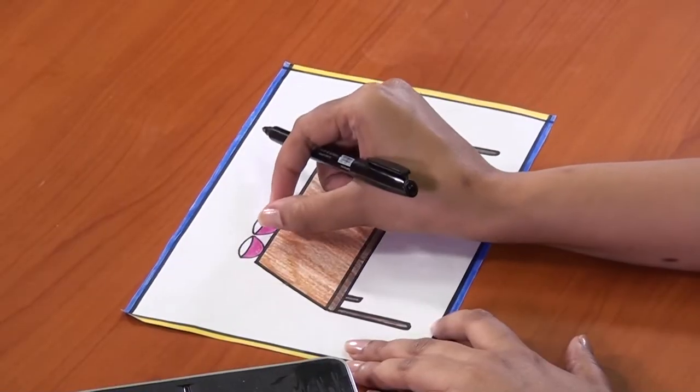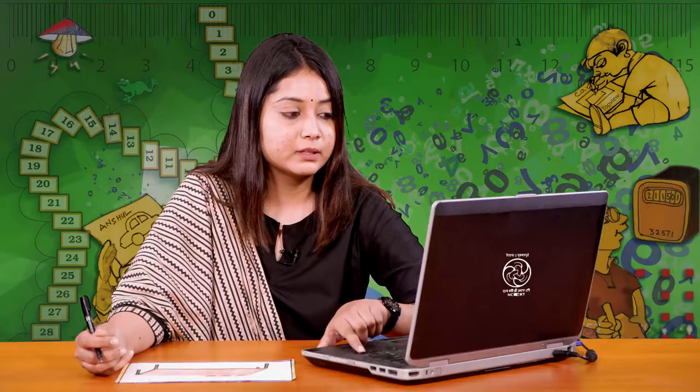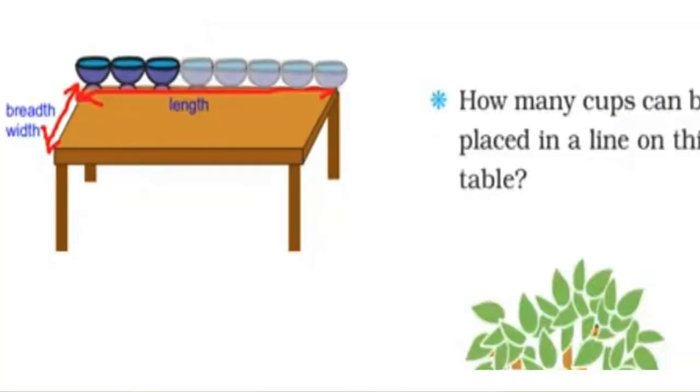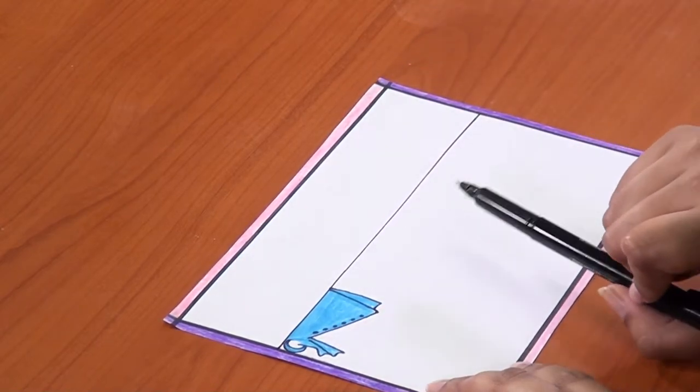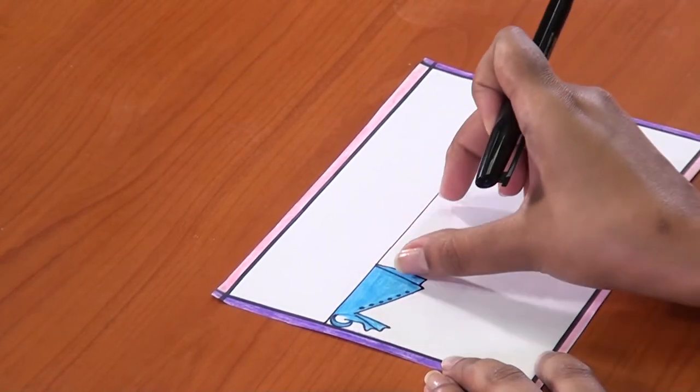Now our second picture: we can use our fingers like this — one, two, three, four, five, six, seven. We can conclude that we can place about seven cups on this table. Looking more carefully, eight cups can be placed in a line on this table. Now you have to guess how many shirts can be hung on this wire. Using our hands to measure, it is approximately three shirts that can be hung over this wire.